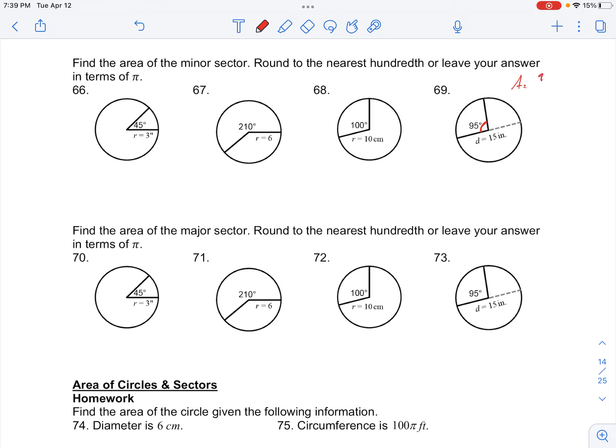So this area is going to be the proportion of its area to the full area. That will be 95 degrees over 360 degrees times the area of the full circle, which is πr².